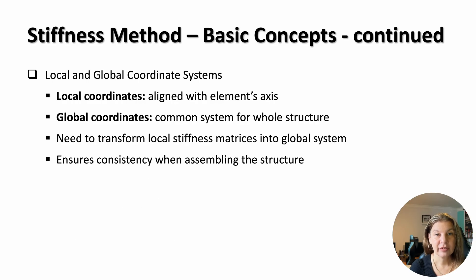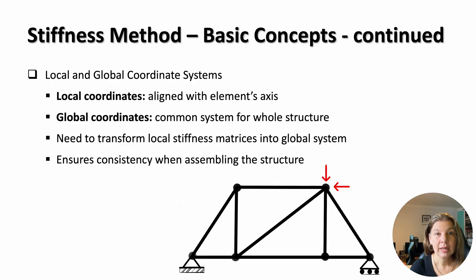Each element's stiffness matrix is first written in its own local coordinate system, which is aligned with the axis of the element — that makes the maths much simpler. But because every element may be oriented differently in the structure, we need to convert these local stiffness matrices into a global coordinate system shared by the entire structure. For the truss, the global coordinate system is the global XY system. However, for a diagonal member, its local coordinates are along the axis of the member. This transformation step ensures that all elements are described consistently, so they can be assembled together into one global stiffness matrix.